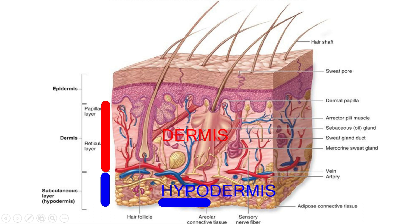I'm going to show you all the layers, especially in gross anatomy — dead body dissection. You can see the skin with superficial fascia.